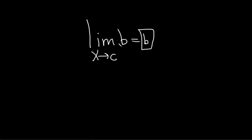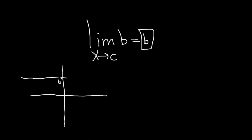Another way to think about this problem is graphically. Let's look at the graph of y equals b. Let's pretend that b is positive just for the sake of explanation, and let's say it's here. This is the line y equals b — a horizontal line. The reason it's a horizontal line is because whenever you have y equal to a number, it's always a horizontal line.